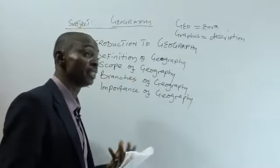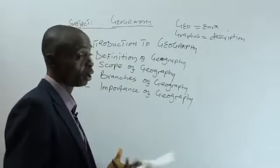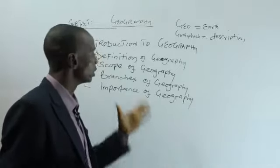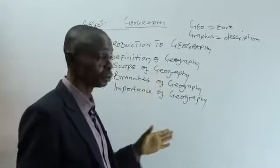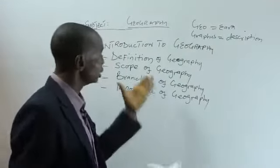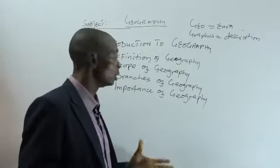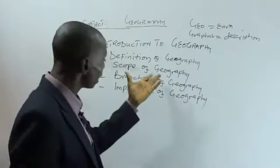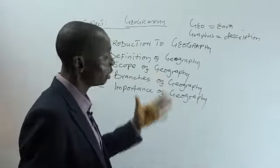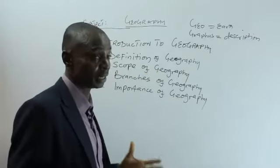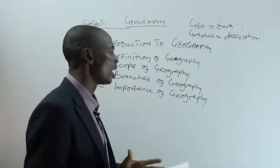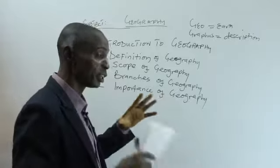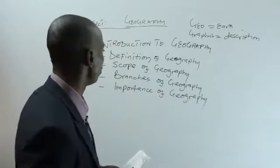Geography is related with physics. Geography is related with biology — in fact, there is what we call biogeography. Geography is related with economics — we have economic geography. Geography is related with mathematics; there is an aspect of geography that is purely mathematics. Geography is related with chemistry — when we look at the chemical components of rocks, that is part of the chemistry aspect of geography. Geography is also related with government — when you talk about the political division of a nation like Nigeria, that is the regional aspect of geography.